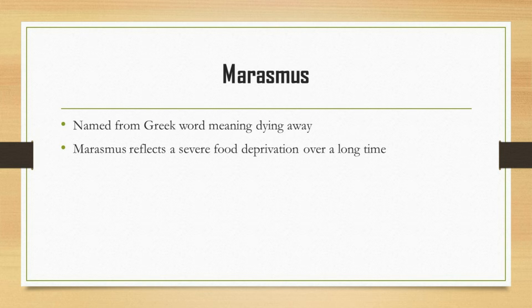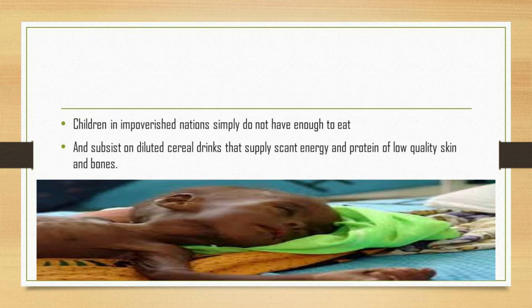Marasmus and kwashiorkor are two different variations of severe protein energy undernutrition. Marasmus is a deficiency of all macronutrients, while kwashiorkor is predominantly a deficiency in protein. Kwashiorkor occurs in people who may have access to carbohydrates such as bread, grains, or starches, but lack protein in their diet. Marasmus has a wasted and shriveled appearance, while kwashiorkor is known for causing edema—swelling with fluid especially in the belly and the face.